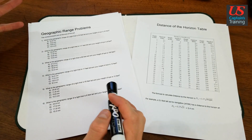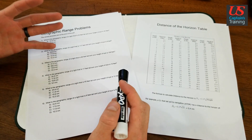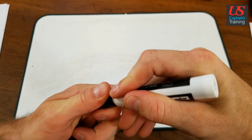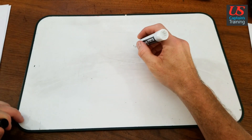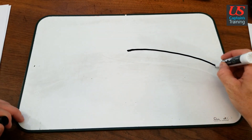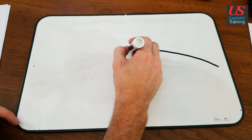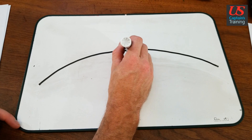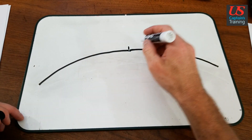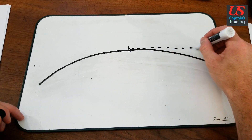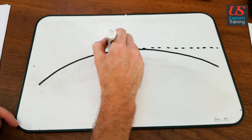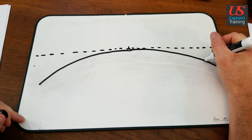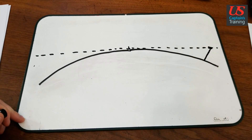Let's look at these geographic range problems as a whole — what are we actually doing when we solve these problems? What we're actually doing is accounting for the curvature of the earth. We have a horizon; you can only see so far until the curvature of the earth gets in the way. So we're going to say this is the horizon, and if you draw a line straight out — a tangent.